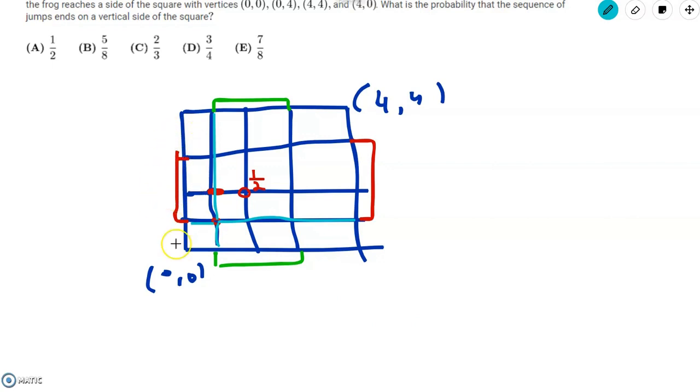So essentially we can pair the left vertical and bottom horizontal, and we can pair the top horizontal and the right vertical. And since it's equidistant from these pairs, and they both consist of one vertical and one horizontal, that means they have the same probability. It has the same probability of reaching a horizontal segment as it has a vertical segment if it starts at that point. So that probability is also one half.